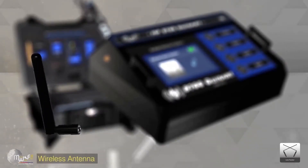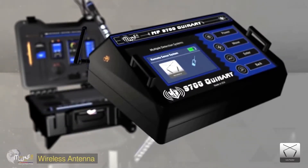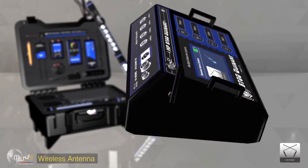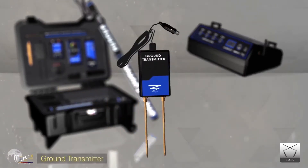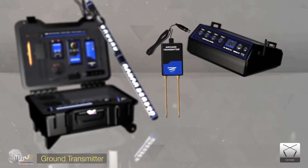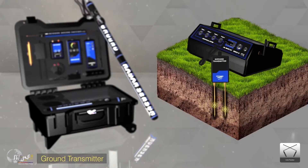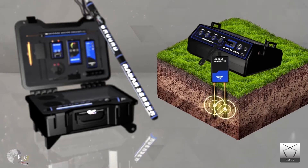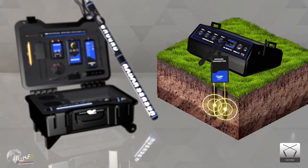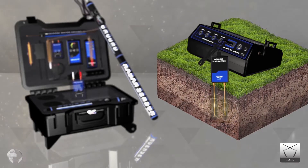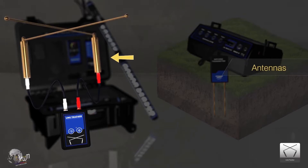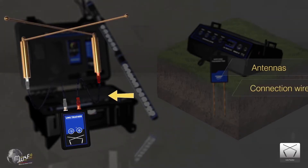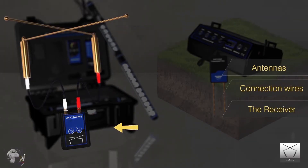First, connect the wireless connection antenna for transmitting data. Then, connect the ground transmitter unit and implement it in the soil, which is responsible for the transmission of electrofrequency waves from the device towards the ground layers. This system consists of receiving antennas, connection wires, and the receiver device.